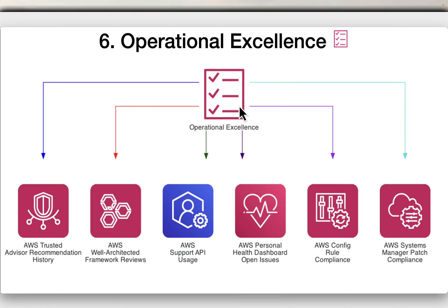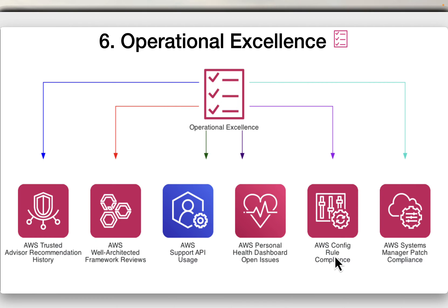There is also a sixth category which is operational excellence. Checks include AWS Trusted Advisor recommendation history, AWS Well-Architected Framework reviews, AWS Support API usage, AWS Personal Health Dashboard open issues, AWS Config rule compliance, and AWS Systems Manager patch compliance — all falling under operations or operational excellence.